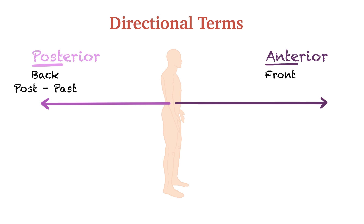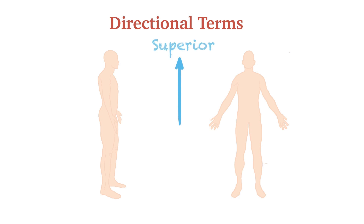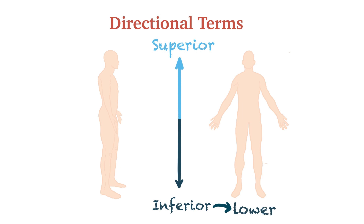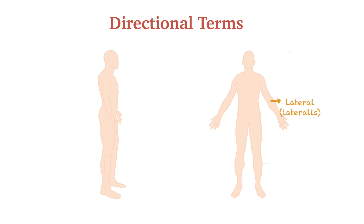Superior or cranial describes a position above or higher than another part of the body structure — close to the head and upper part of the body. For example, the shoulder is located superiorly to the hand. Inferior or caudal describes a position below or lower than another part of the body structure — away from the head, near or toward the tail. The legs are inferior to the pelvis. Lateral describes the side or direction toward the side of the body, away from the midline — the thumb is located on the lateral side of the hand. Medial describes the middle or direction toward the middle of the body — toward the midline. For example, the little finger is located on the medial side of the hand.